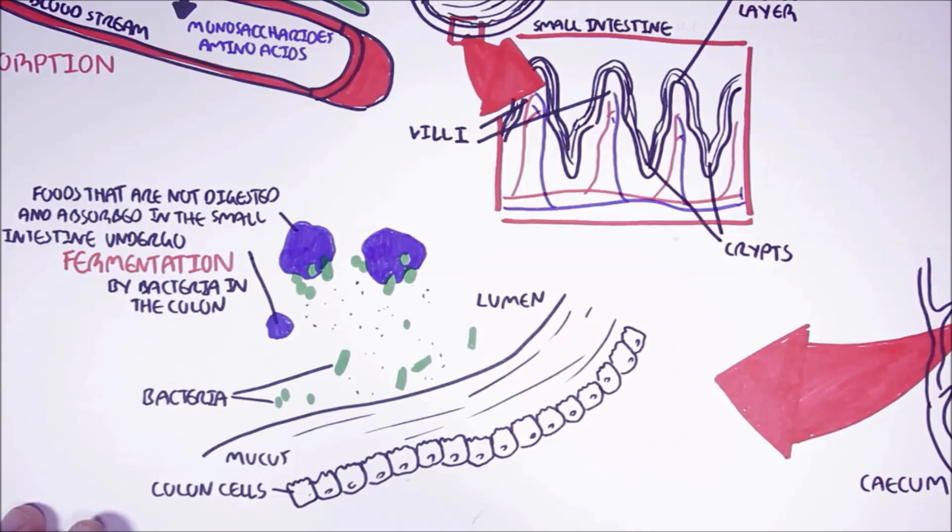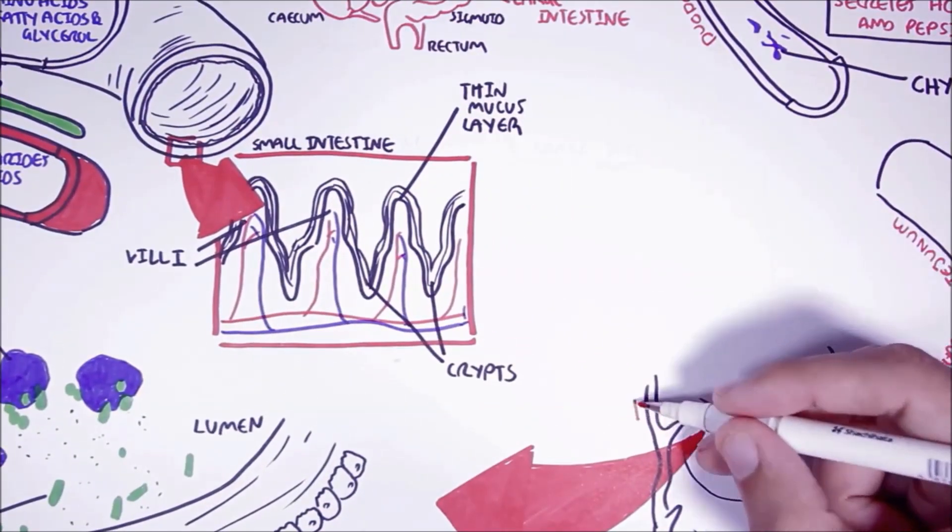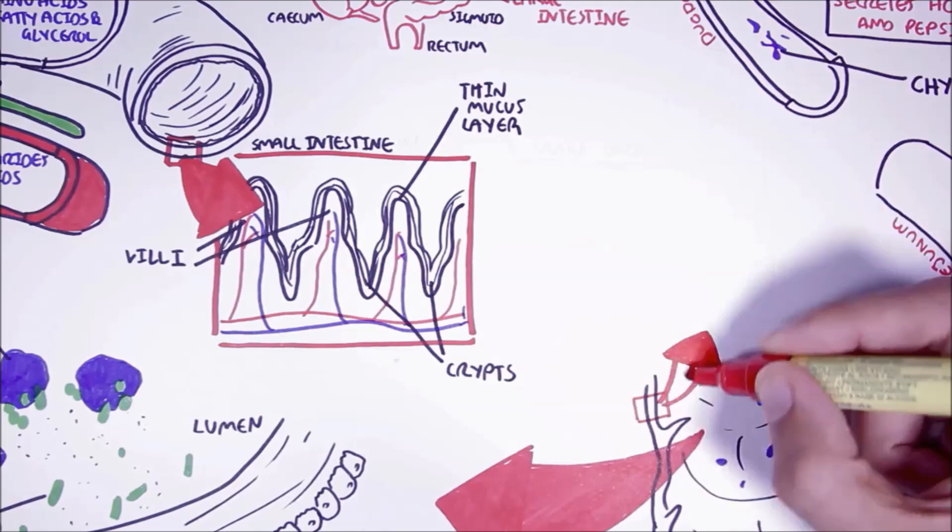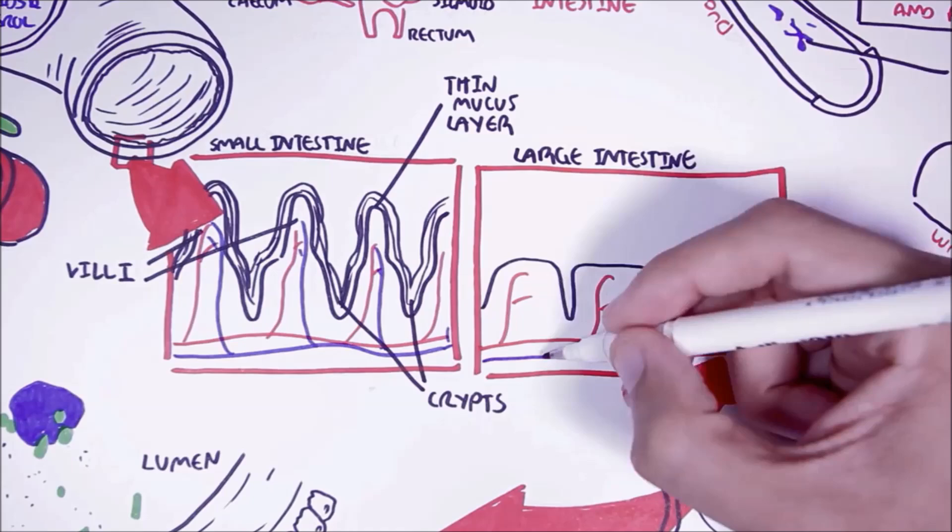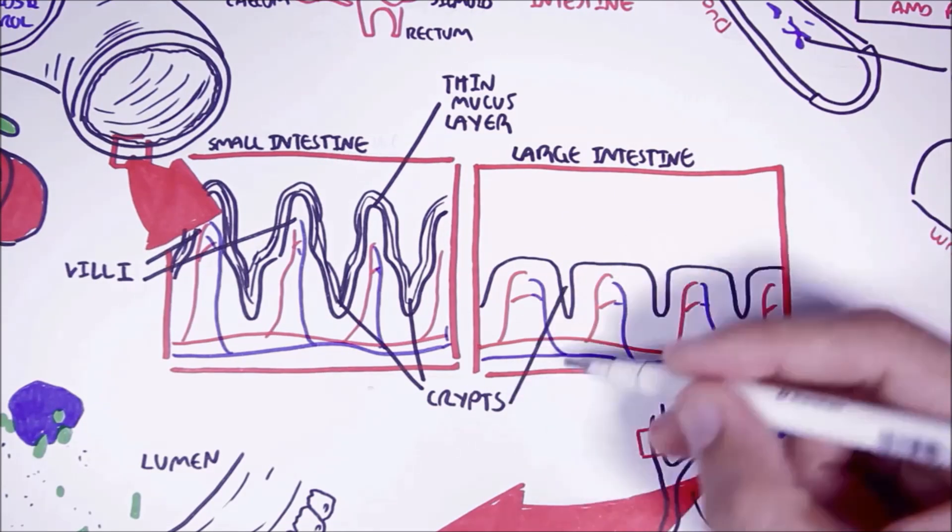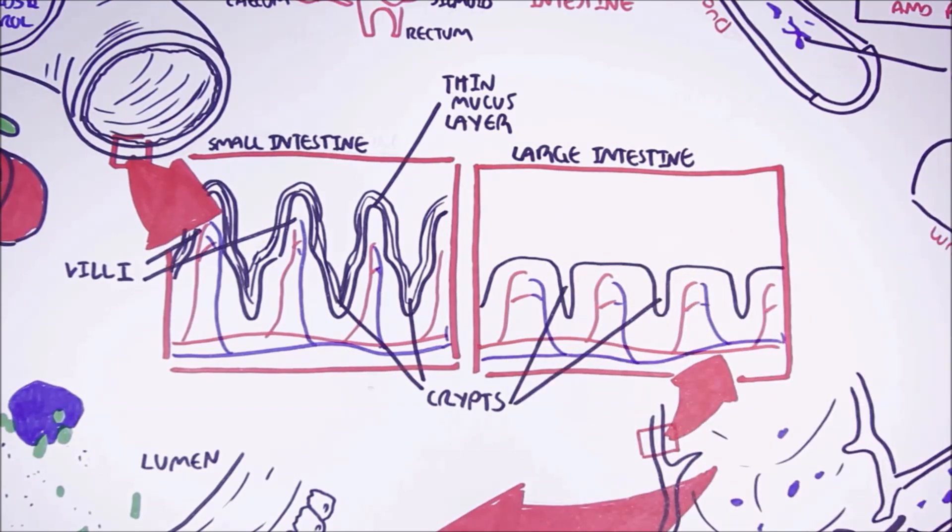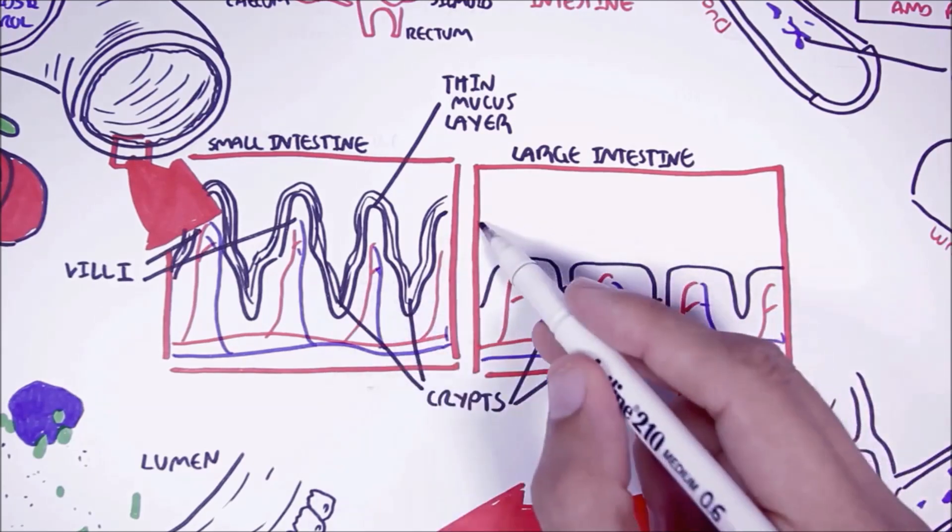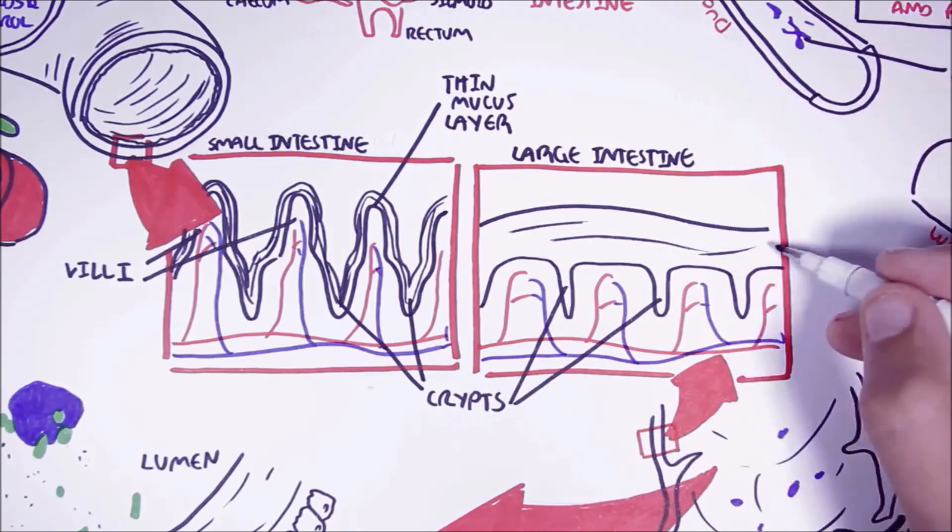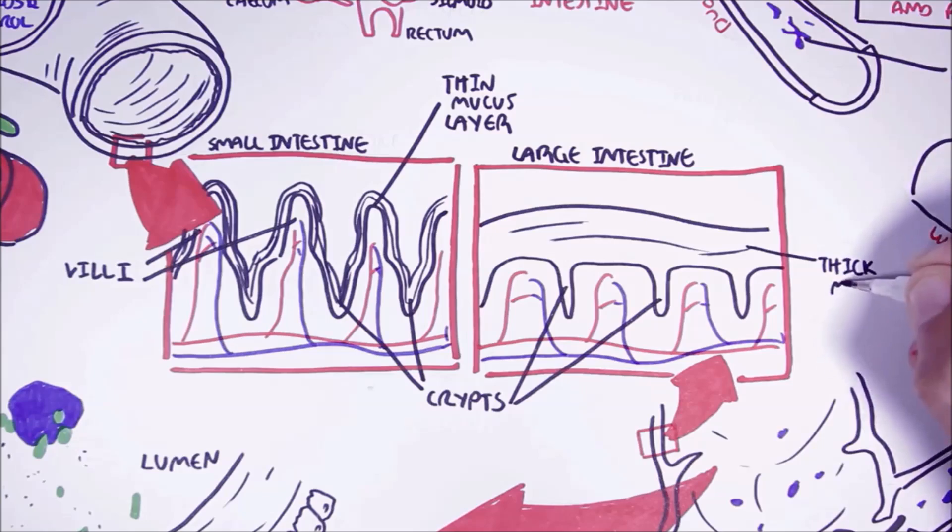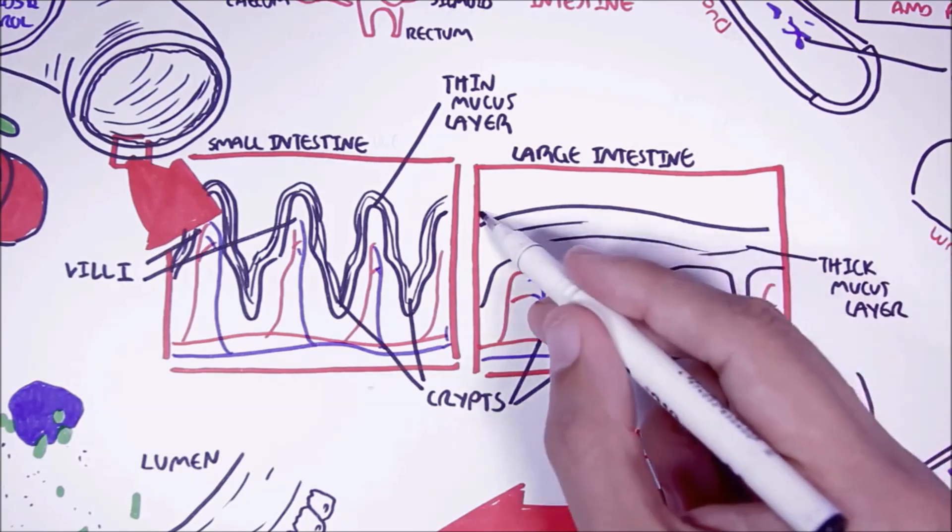Finally, it is important to compare the histology between the small intestine and the large intestine. Let's take a section of the large intestine. It also has a rich blood supply to the lining. The large intestine has crypts where stem cells keep dividing, renewing the cells above. However, the large intestine does not have villi. The large intestine has a very thick mucus layer compared to the small intestine, with an additional thinner mucus layer on top.